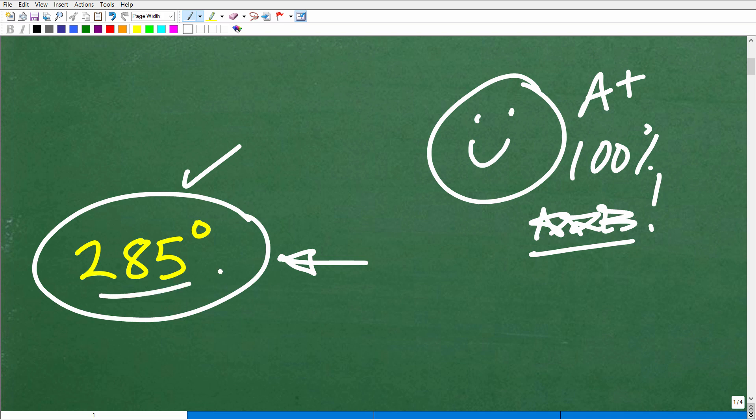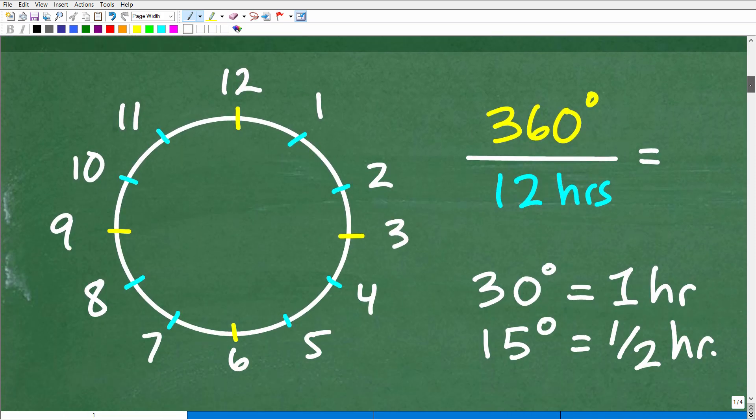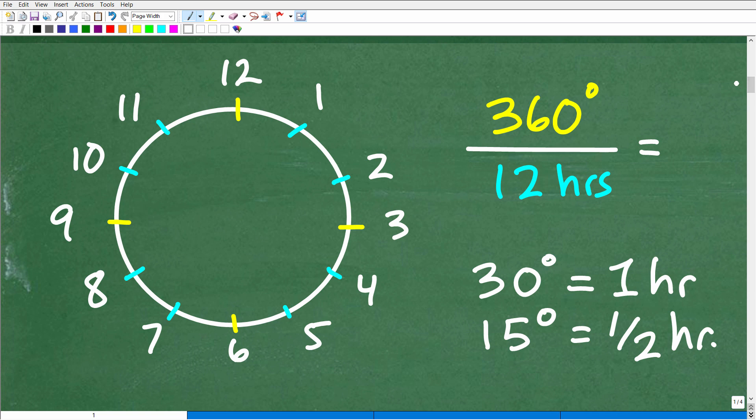So again, the answer is 285 degrees. So we're going to have to know something about degrees. And let's go ahead and kind of model this situation. Again, I kind of told you, think of a circular clock face. So old school clock, what do we have here? Well, most of our clocks are digital these days, right? And you look on your cell phone, you just see the time.